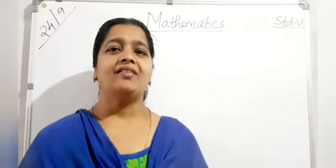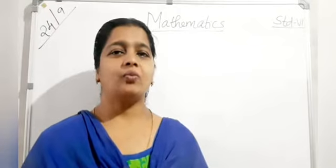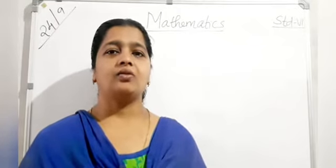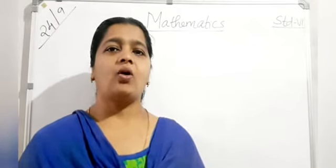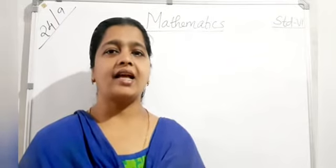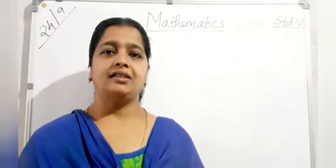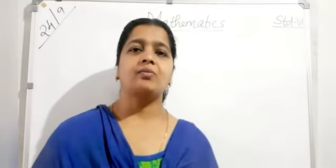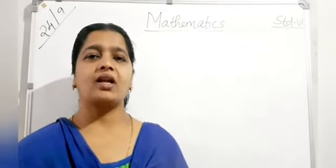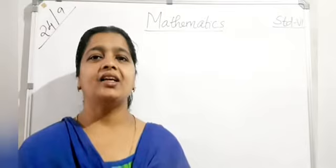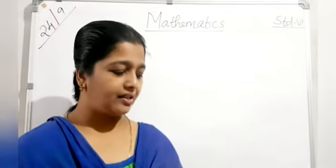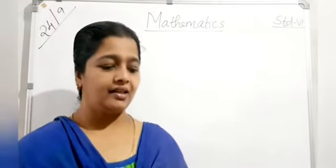From chapter 2: the smallest natural number is 1. The smallest whole number is 0. Whole numbers are the collection of 0 along with the natural numbers. Successor means adding 1 to a given number; predecessor means subtracting 1 from a given number.